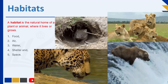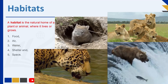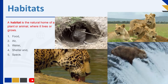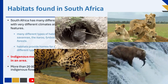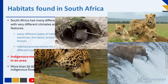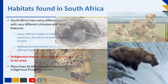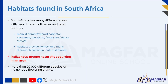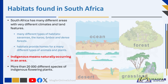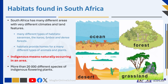These include air, water, food, shelter, and space. South Africa has many different areas with very different climates and land features, which gives it many different types of habitats.